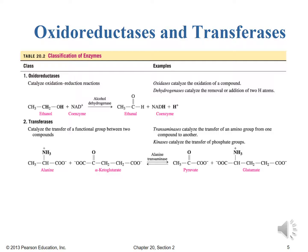For a transferase we catalyze the transfer of a functional group between two compounds. So we can have either transaminases which catalyze the transfer of an amino group from one compound to another, as well as kinases which catalyze the transfer of phosphate groups.